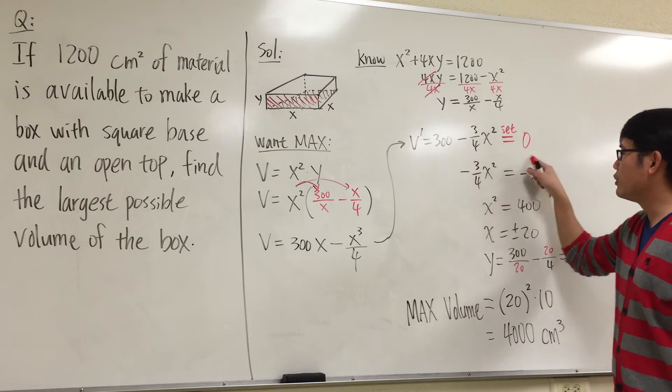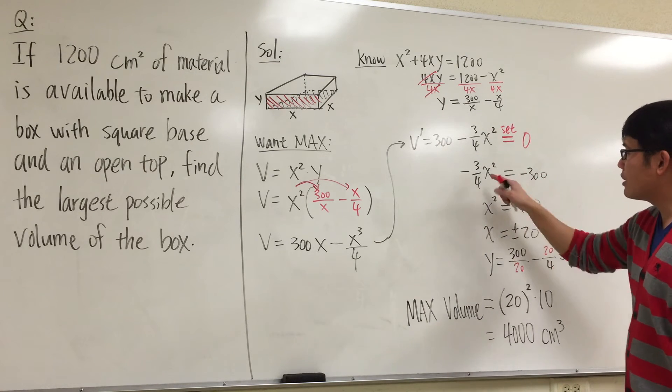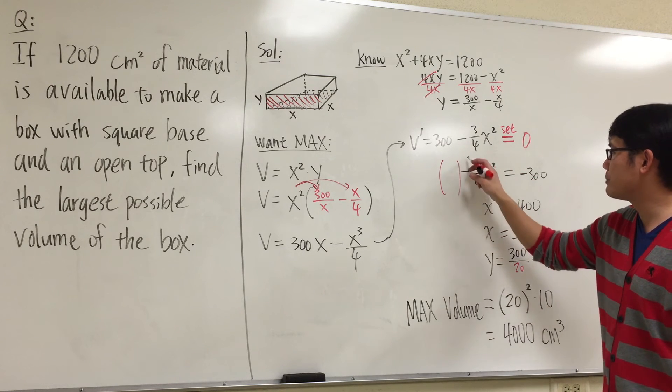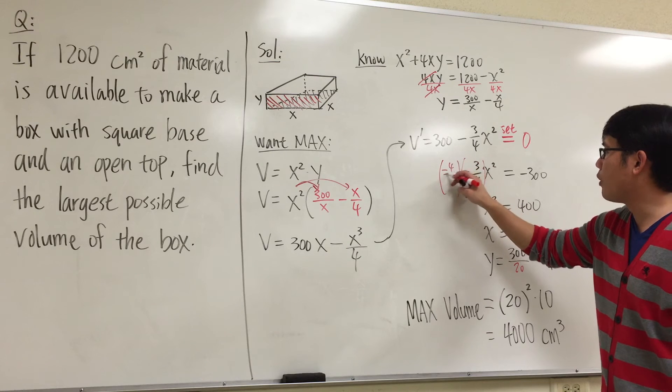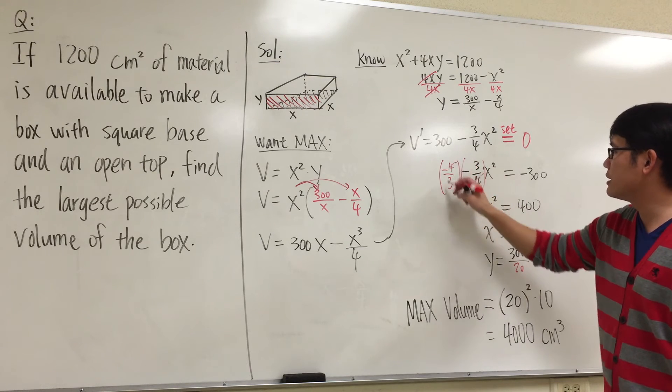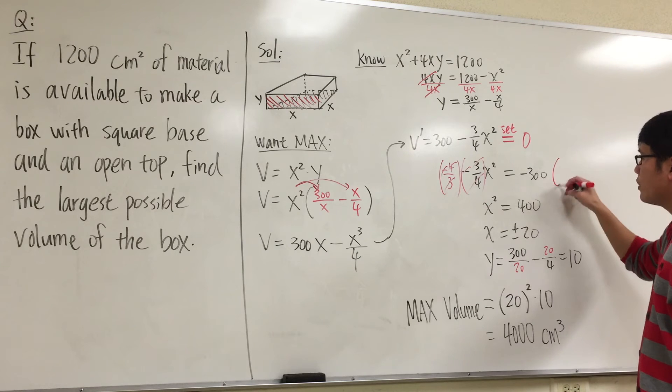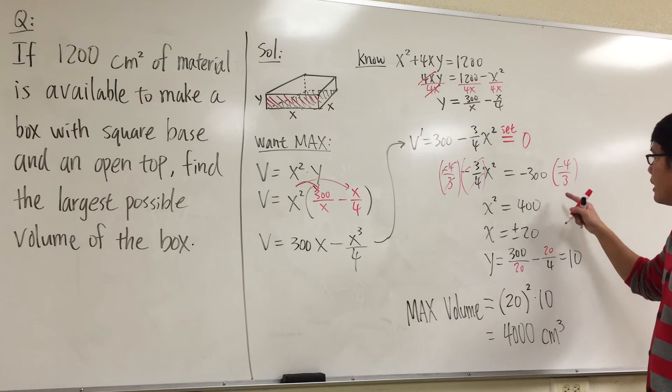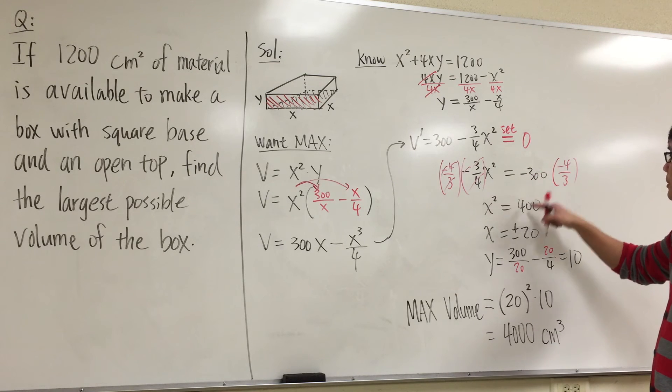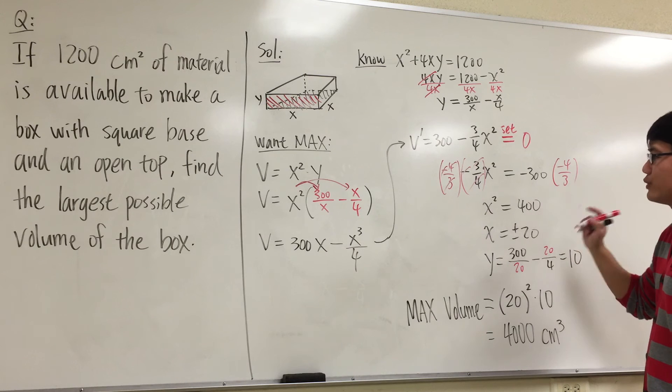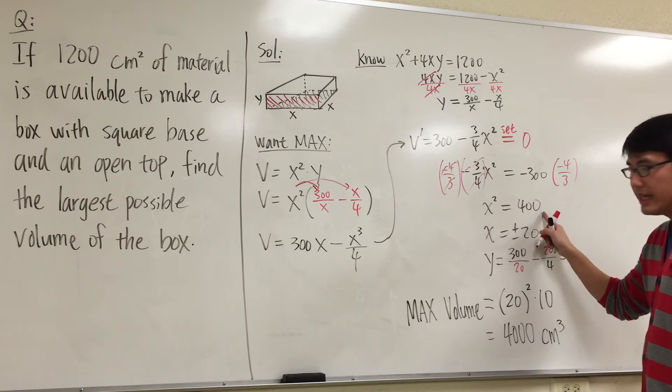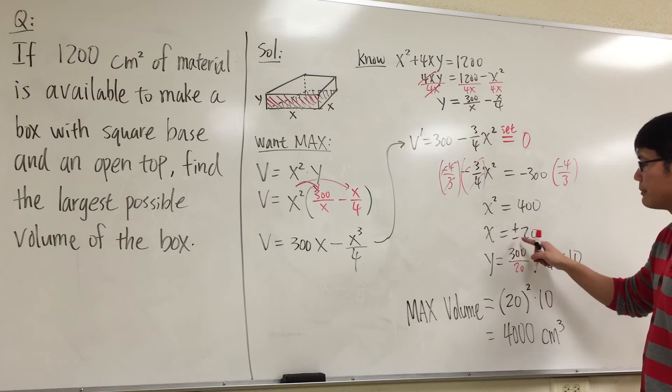Subtract 300 on both sides. To get x by itself, we have to first multiply both sides by -4/3. So that way this will cancel out. Multiply both sides by -4/3. You can reduce this to 100. And negative times negative equals positive. 100 times 4 will be 400. So x² = 400. You square root both sides. You get x = ±20.